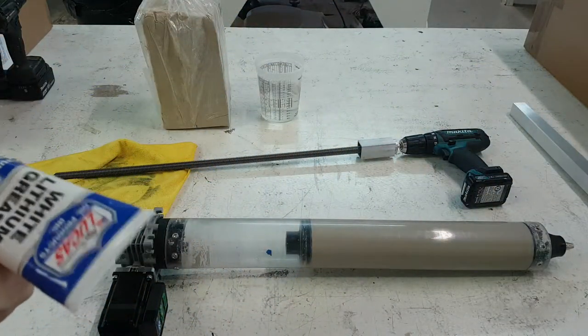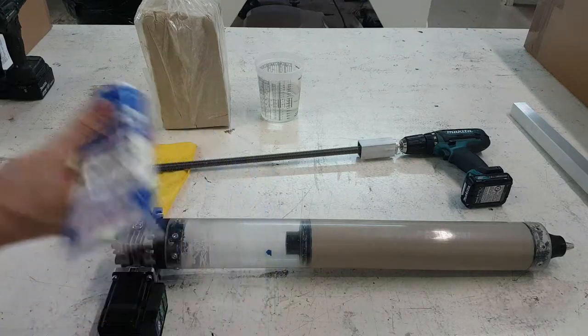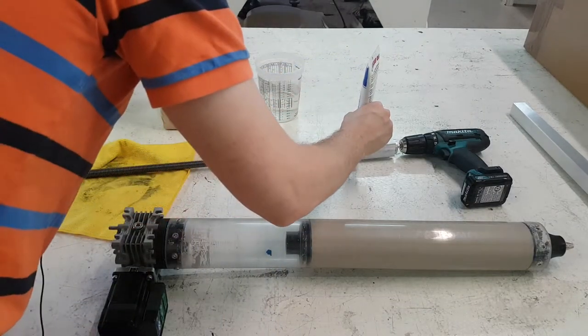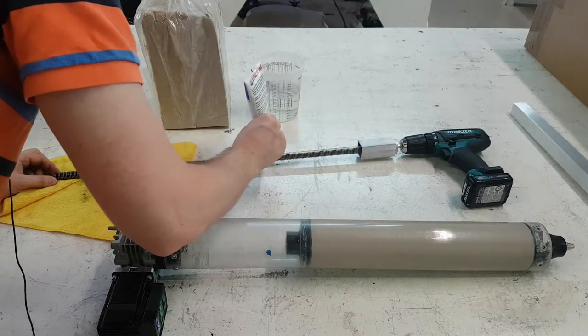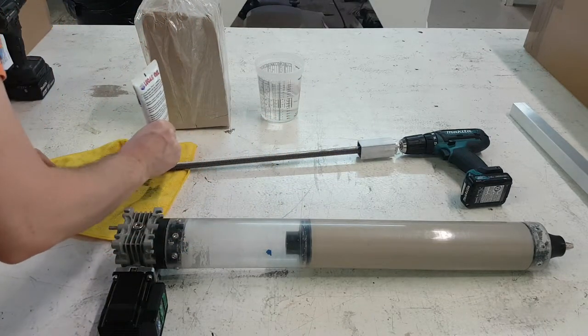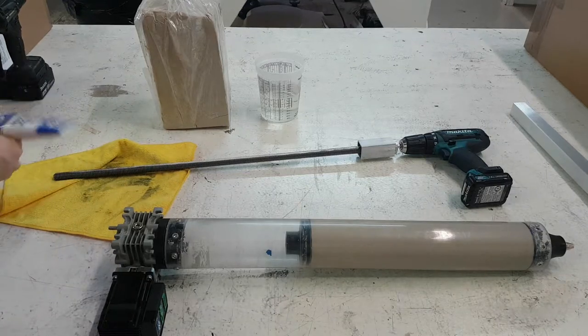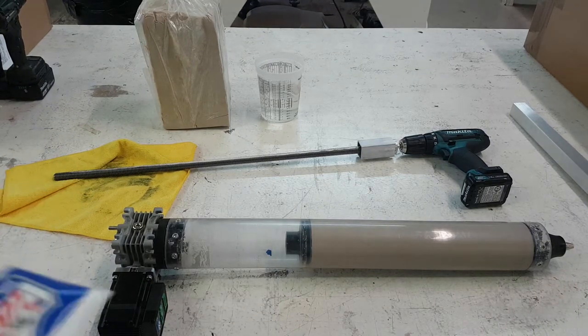To add lubricant to the screw, you can just add a little bit of white lithium grease. Just a strip down it is more than enough. If there's excess grease, you can rub it in with your finger.